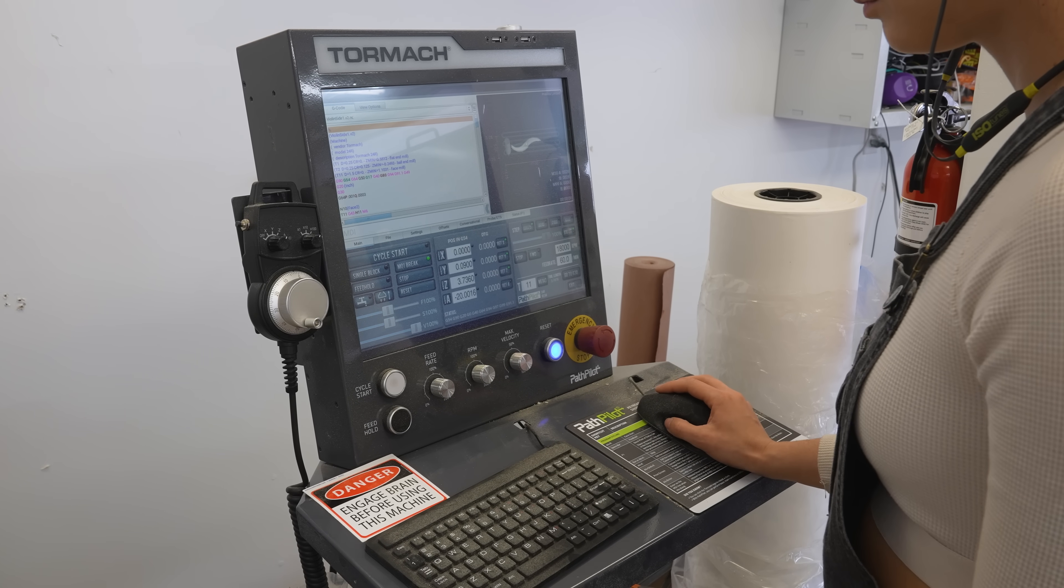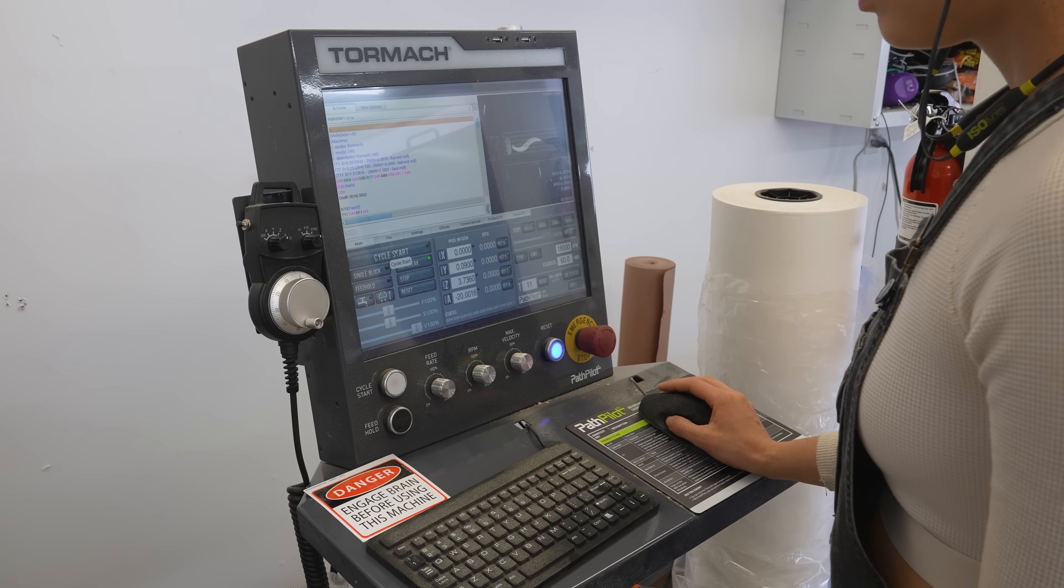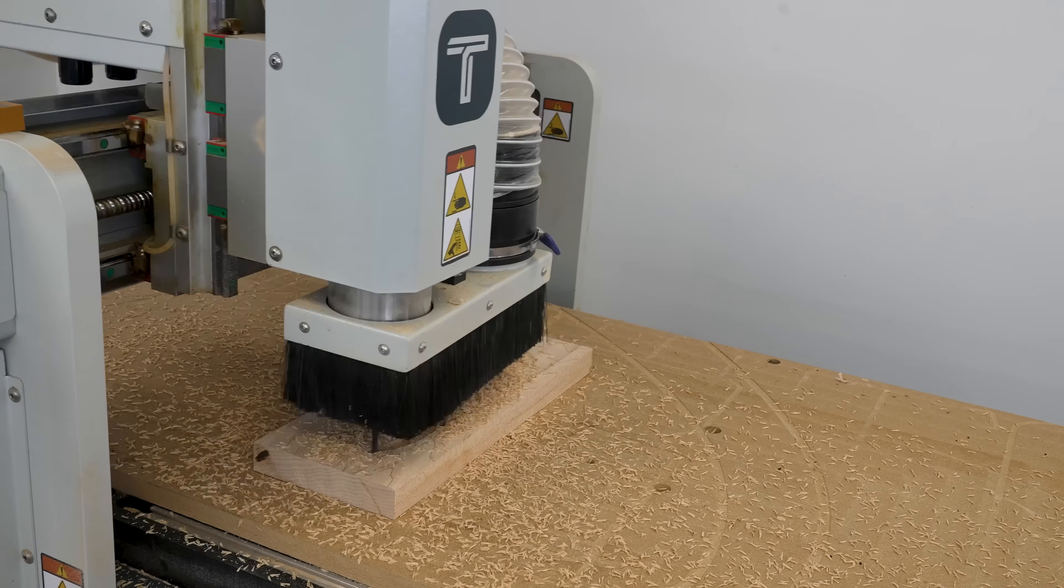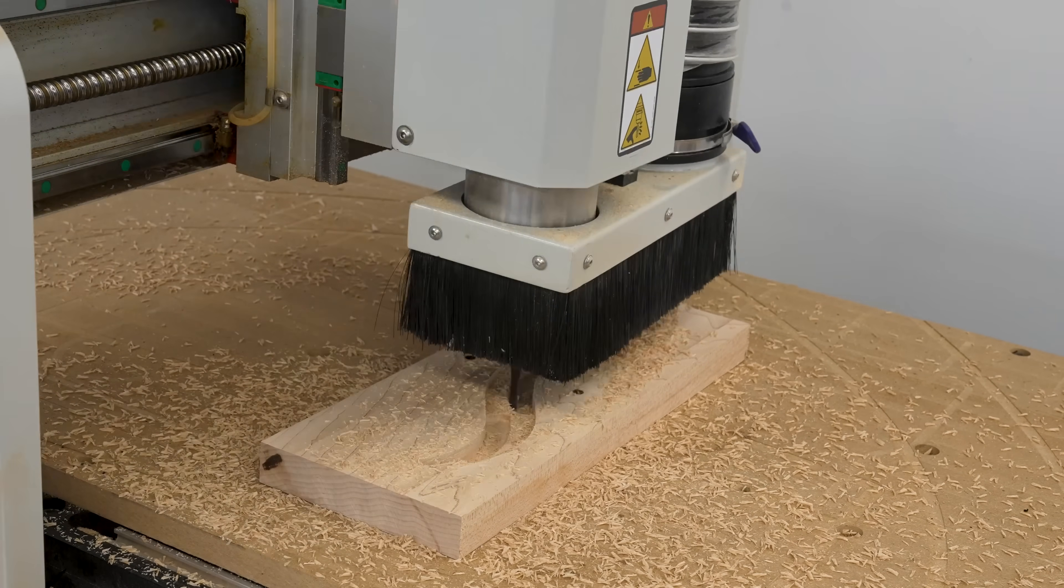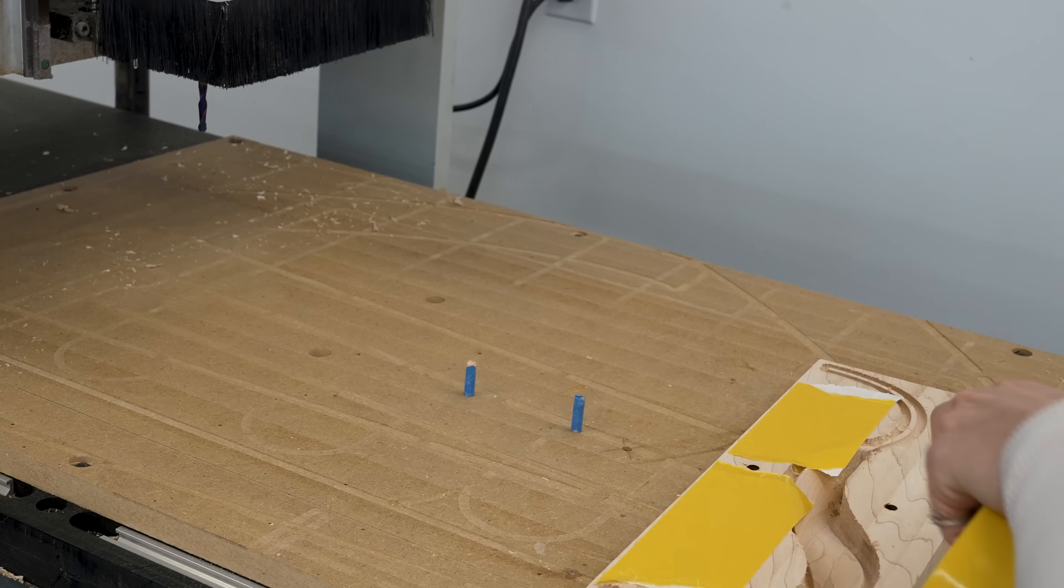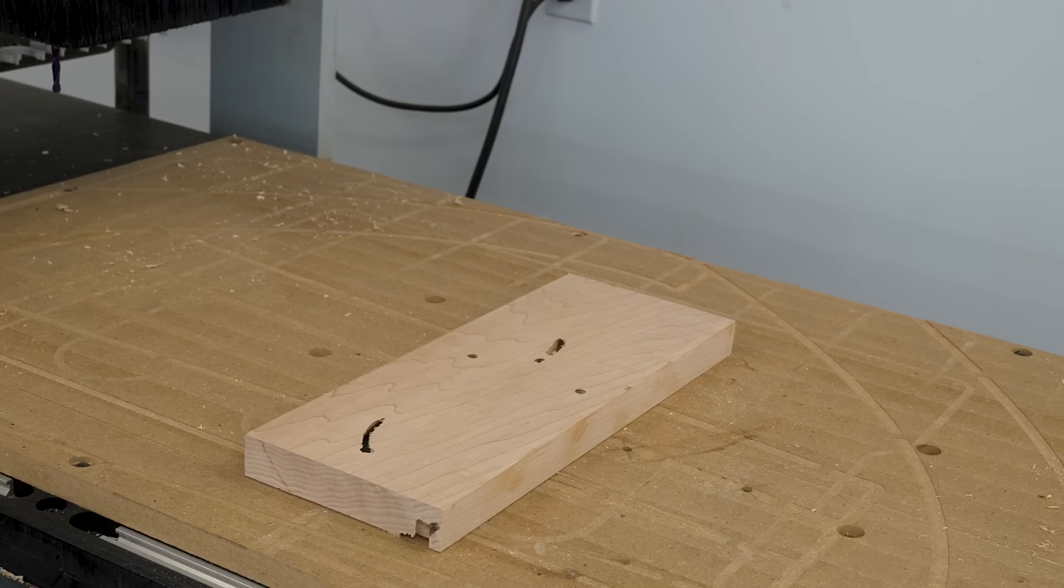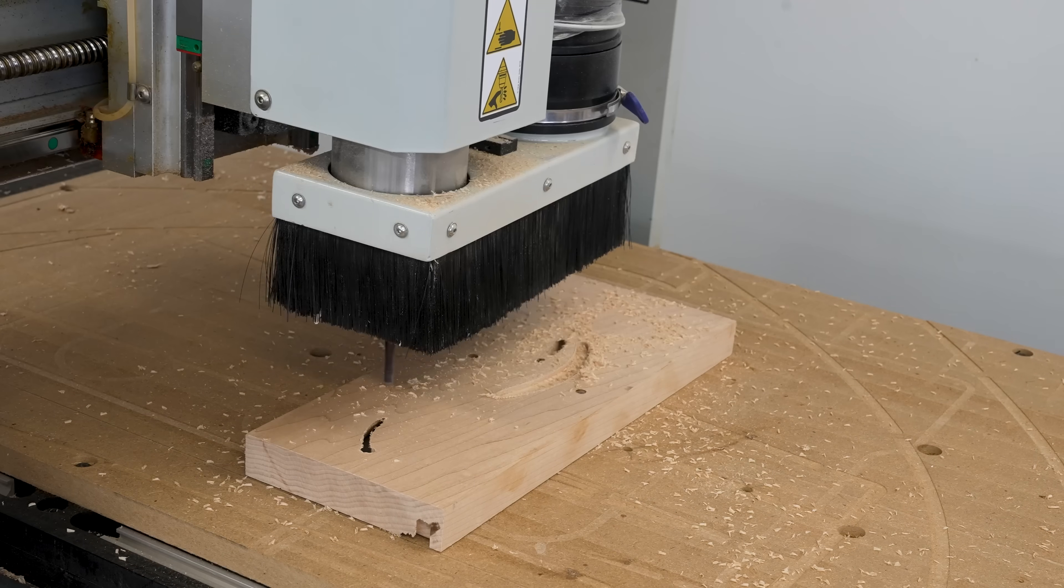I am not gonna lie, it doesn't really get less nerve-wracking each time I need to hit go on this machine. But the first side looked okay, and I flipped it over to run the second side. The maple is so much more stable than the plywood, so I didn't feel the need to reinforce it with epoxy, and it held up okay.